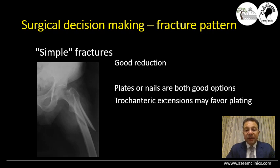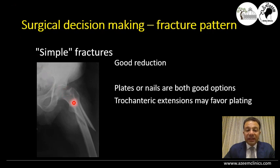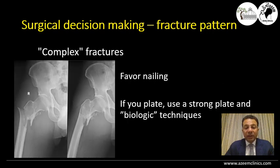Reduction can be done by open, closed, or preferably a midway approach — mini-open or open with biological technique. Fixation can be done by plates or nails; both have good options. It is preferable in fractures with trochanteric extension to use plates, to preserve the entry point of the nail. However, in complex fractures, nailing is the best option. Preserving the biology is a must.